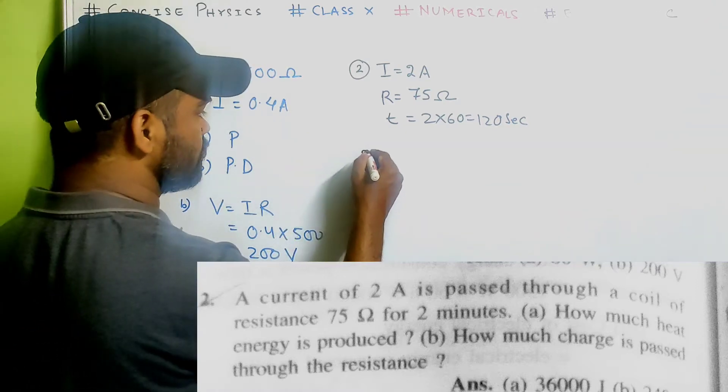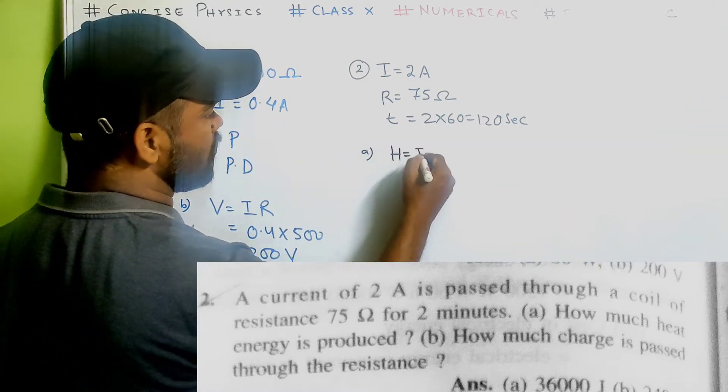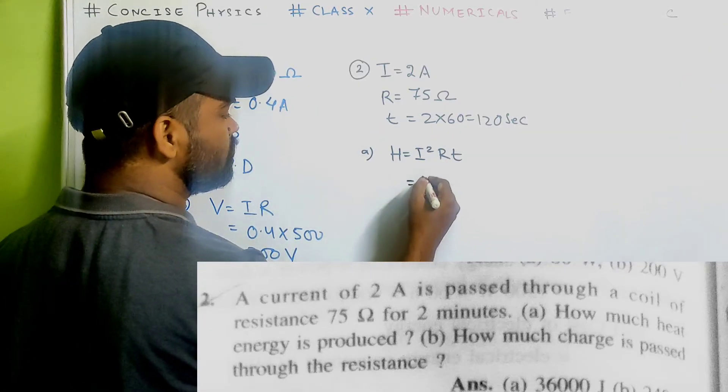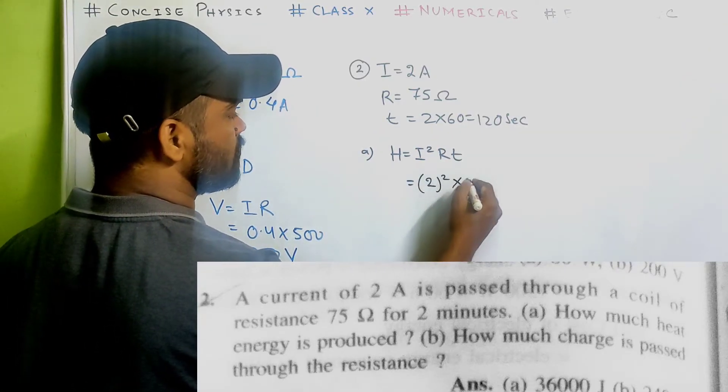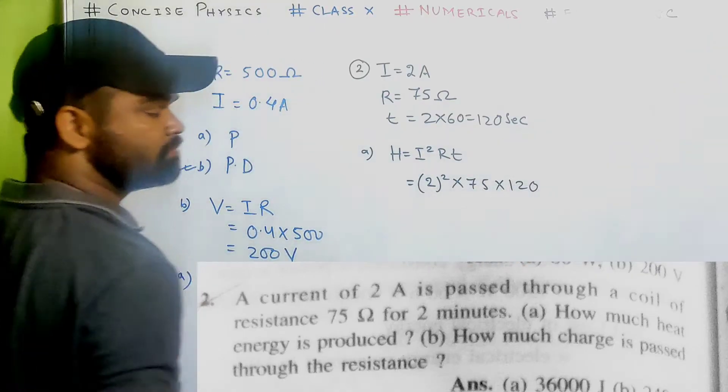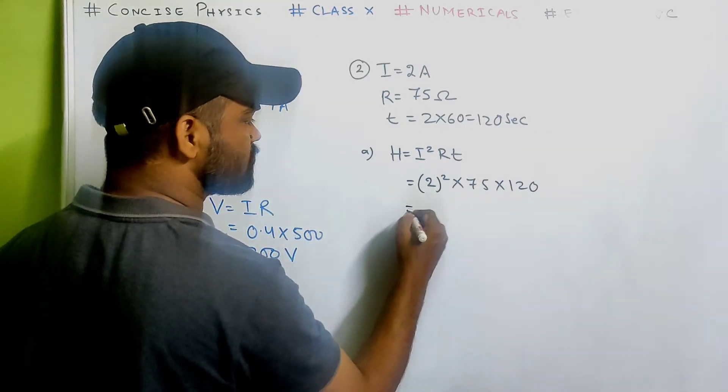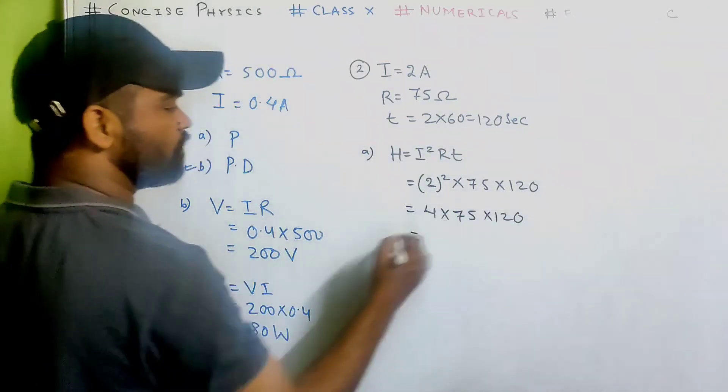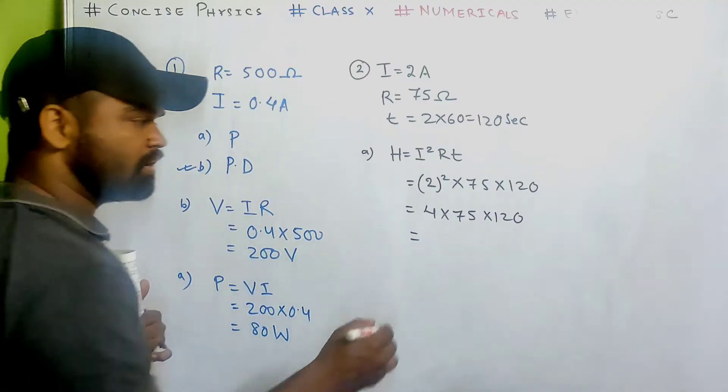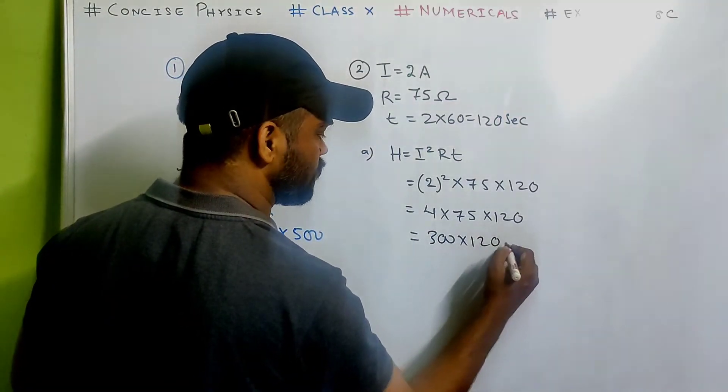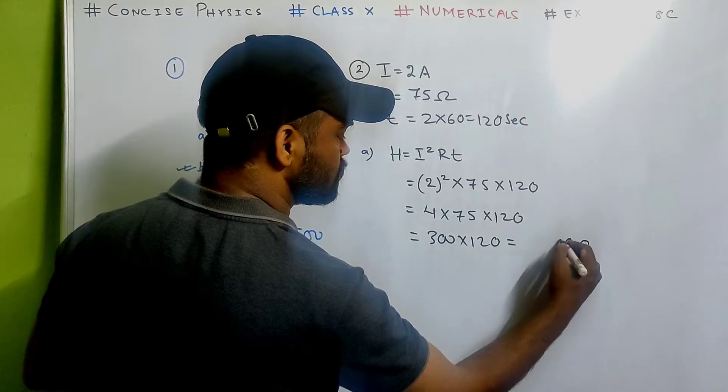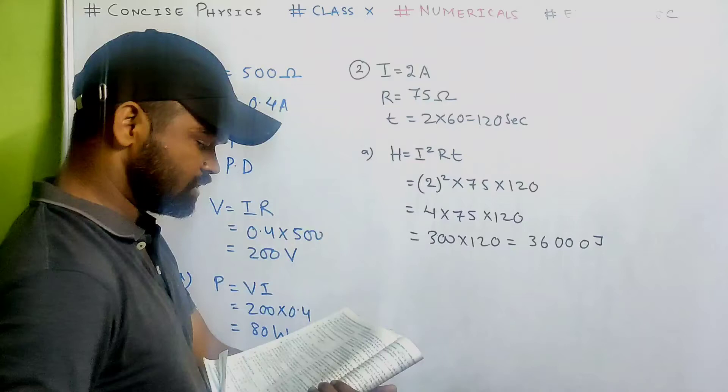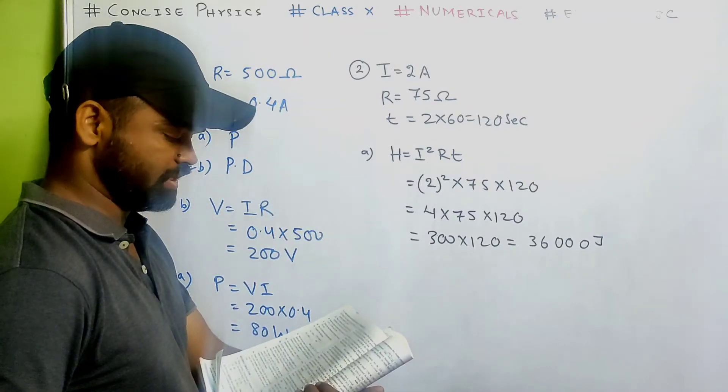First of all heat energy. We know H equals to i square rt. Remember this formula? So just substitute the value. I square, 2 square is 4, r is 75, and t is 120 second. That's 4 multiplied by 75 multiplied by 120. So 4 into 75 is 300, 300 multiplied by 120, that's 36000 joule of heat energy.